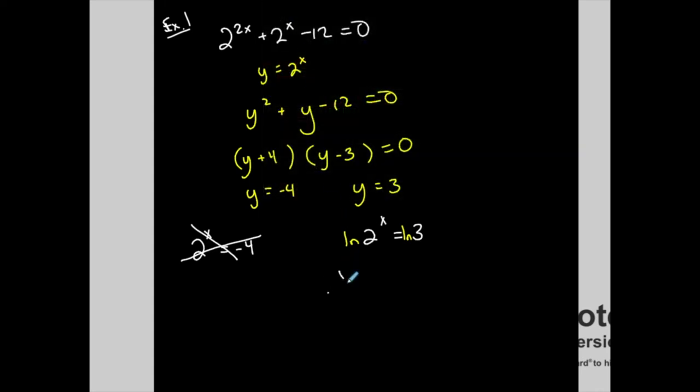x times ln of 2 is equal to ln of 3. Divide both sides by ln of 2. So I have now x is equal to ln of 3 divided by ln of 2, and this is my exact solution.